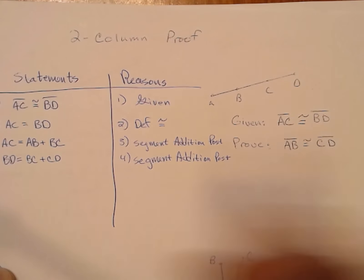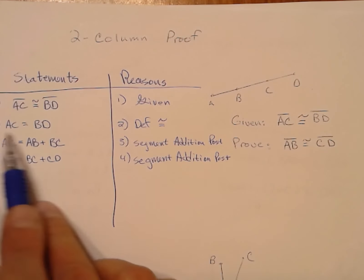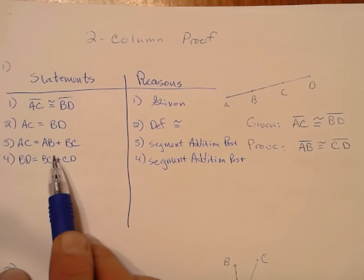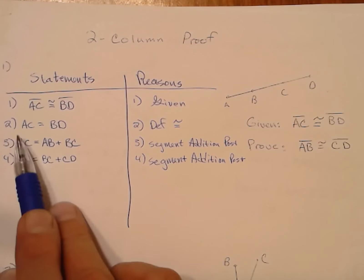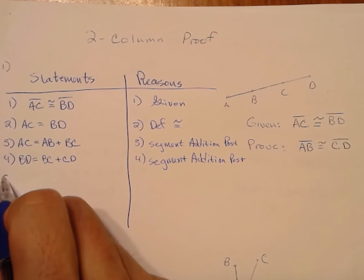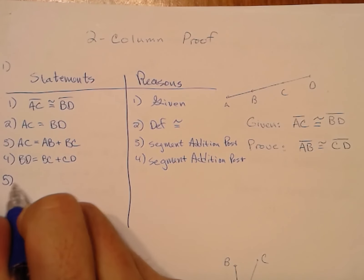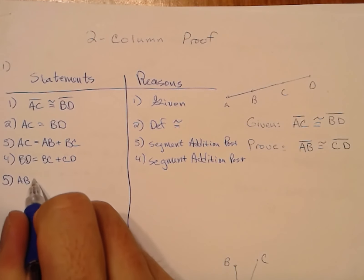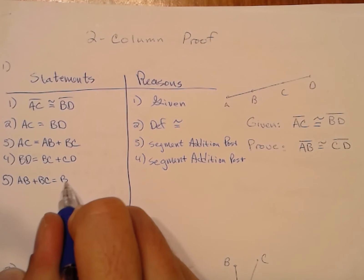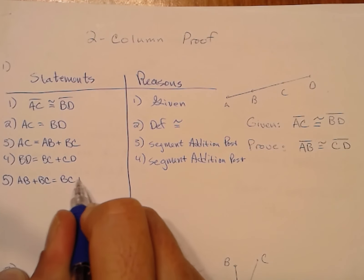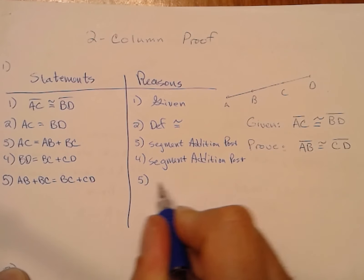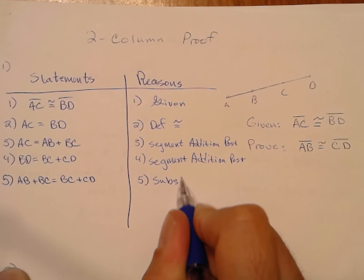Now I'm going to rewrite statement number 2, substituting statement number 3 in for the left-hand side and statement number 4 in for the right-hand side. So we have AB plus BC equals BC plus CD. That's substitution.